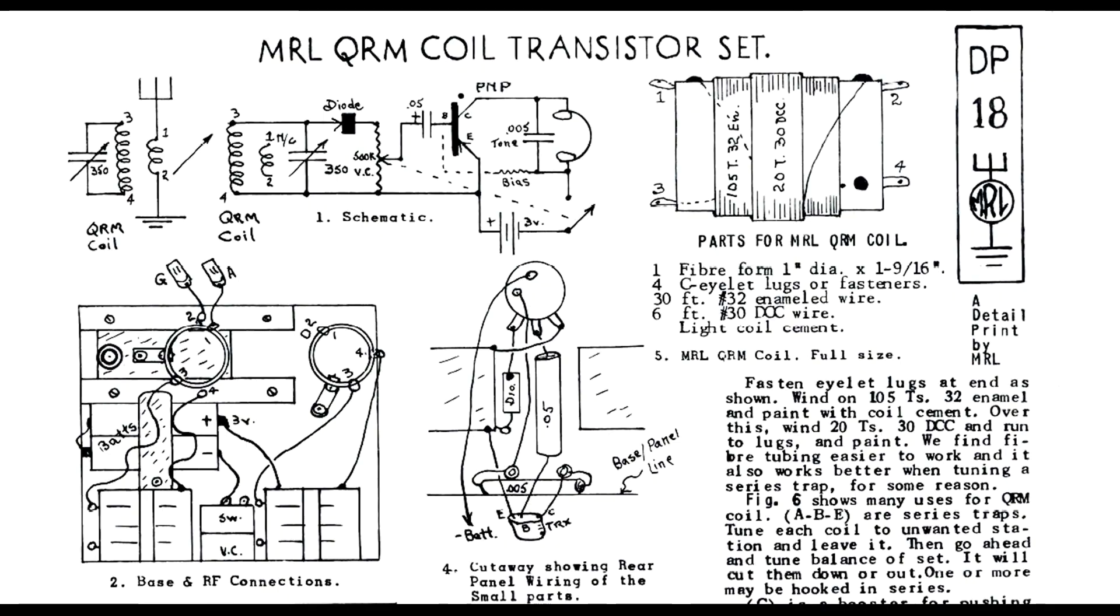Here's a closer look at the top of Detail Print 18. Top left we have a schematic diagram of the radio. To the right is a drawing of the coils and instructions on how to make them. Under the schematic is a picture of the layout of the chassis, and to the right is a pictorial diagram showing how the parts are connected.